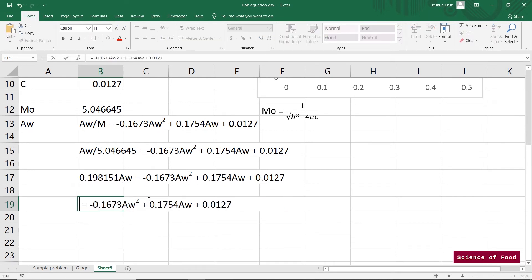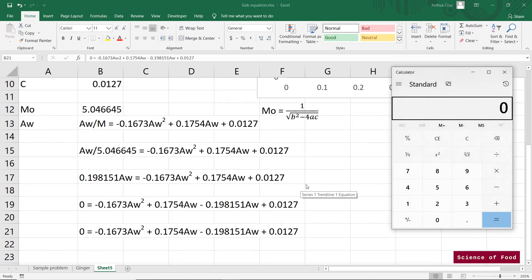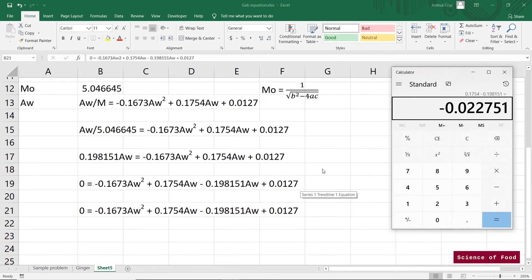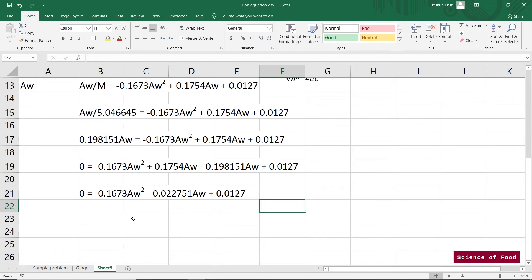And let's just do that. So let's transfer this to the other side. And we can move this at the back of the equation. So to simplify this further, we can have 0.1754 minus 0.198151, which gives us a value of negative 0.022751. So now that we have our simplified quadratic equation, we can now use the quadratic formula to solve for this.